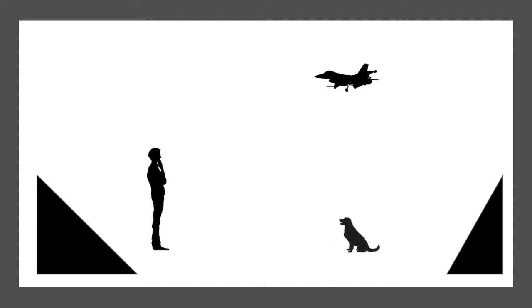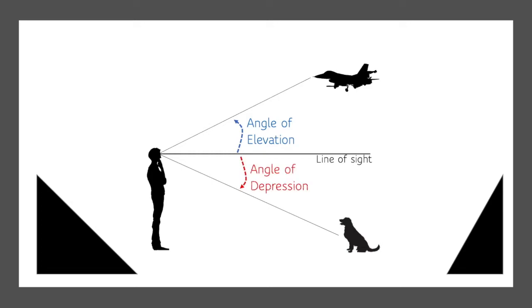Here's a guy, and if he's looking straight ahead, this is what we call his line of sight. If he looks up at the airplane, it creates an angle, and this angle we call the angle of elevation. If he looks down, he creates a different angle, and this angle we call the angle of depression. Let's see how this works.